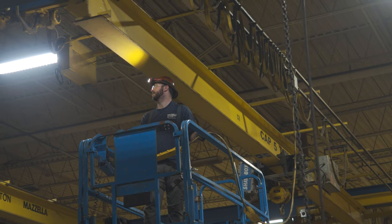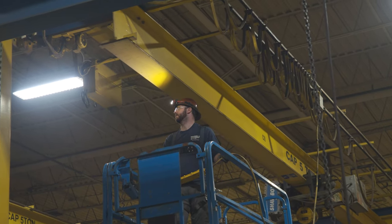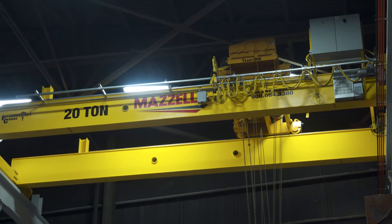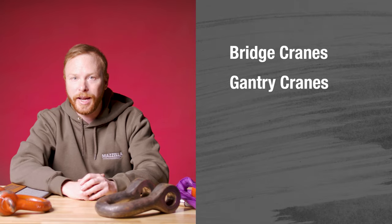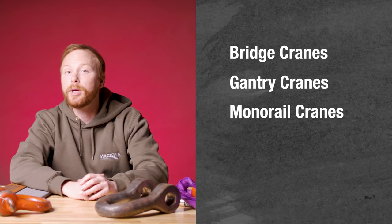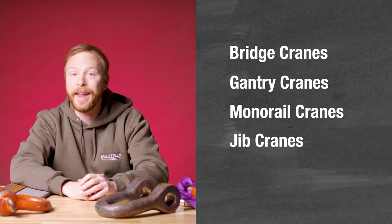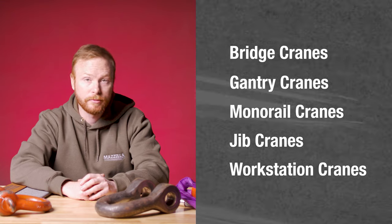Unlike the cranes you see on construction sites, the majority of overhead cranes are not mobile and are permanent fixtures. The different types of overhead cranes are bridge cranes, gantry cranes, monorail cranes, jib cranes and workstation cranes.